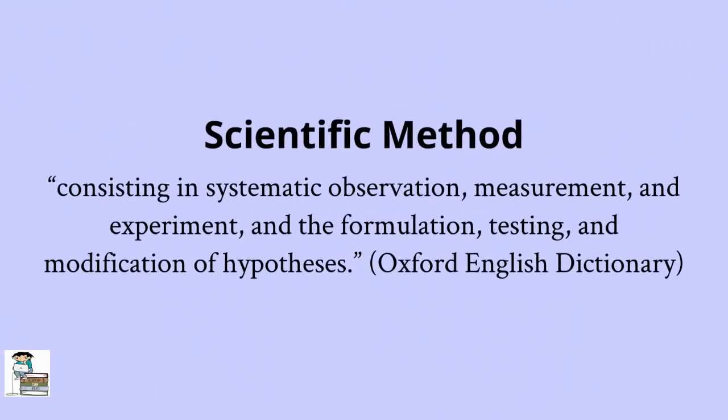The Oxford English Dictionary defines this method as consisting in systematic observation, measurement and experiment, and the formulation, testing and modification of hypotheses. So the view we will be critiquing is whether the methods of science are the only means of obtaining knowledge concerning the natural world.